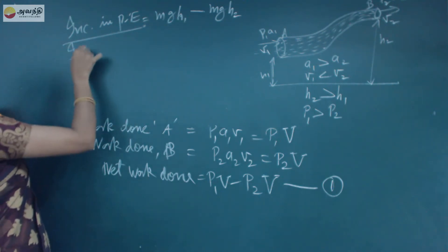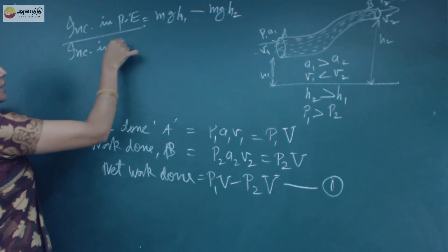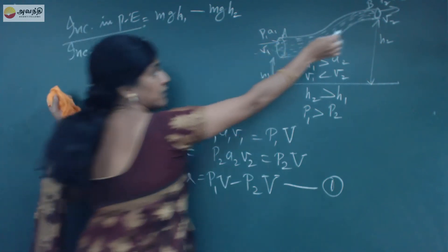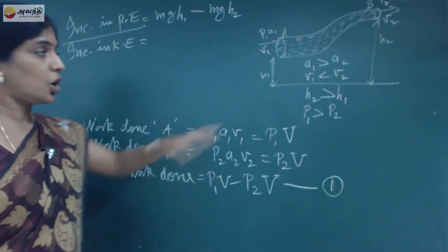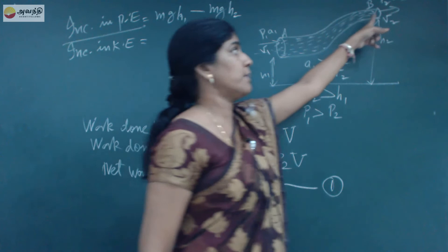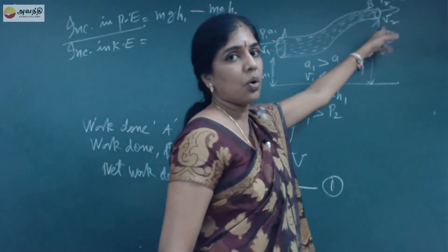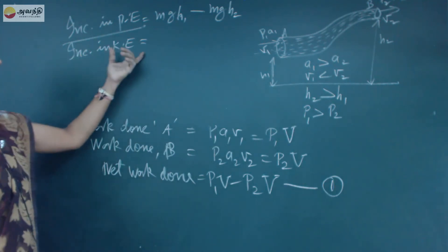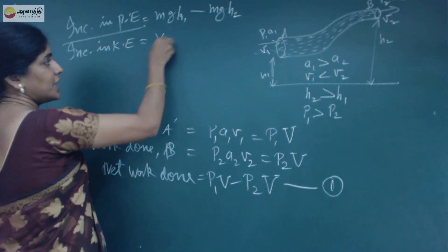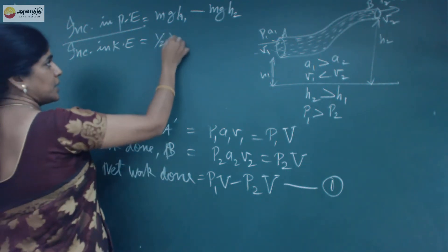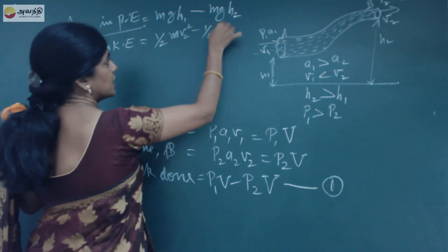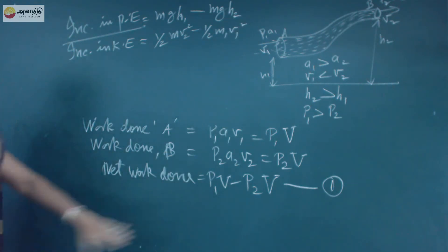Similarly, the increase in kinetic energy: since area at point B is smaller, velocity at B is greater, so kinetic energy is greater there. The increase in kinetic energy is half MV2 squared minus half MV1 squared.